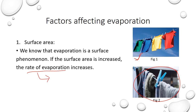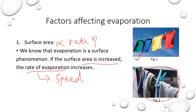Rate of evaporation refers to the speed of evaporation. So the speed of evaporation increases when the surface area increases. Surface area is directly proportional to the rate of evaporation — as the surface area increases, the rate of evaporation increases; if the surface area decreases, the rate of evaporation decreases.